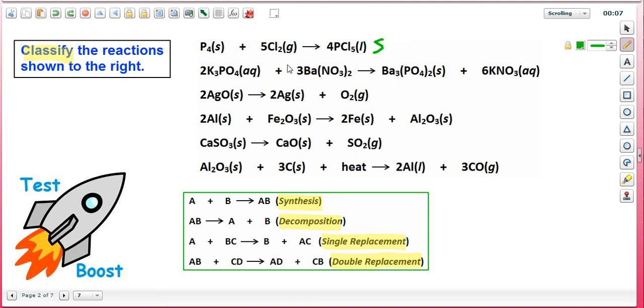Now in the second reaction, notice how the metal cations potassium and barium are switching their anions in the formation of products. This is a double replacement reaction.